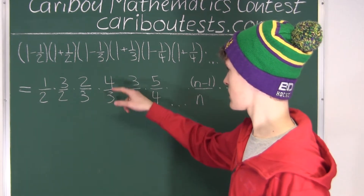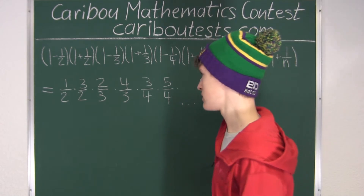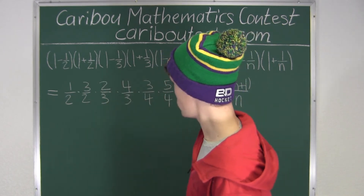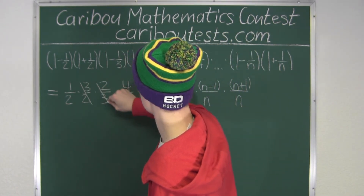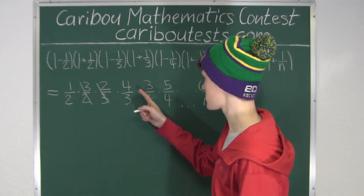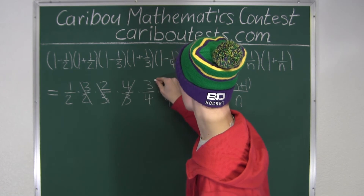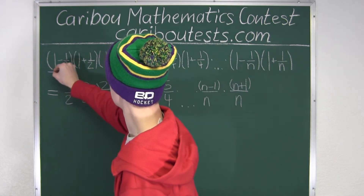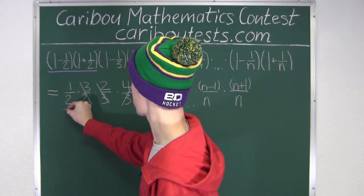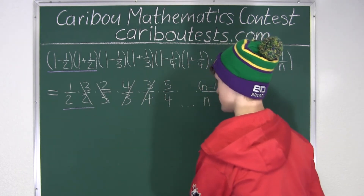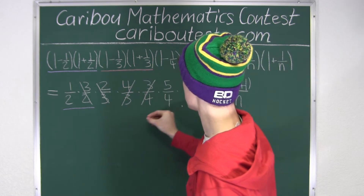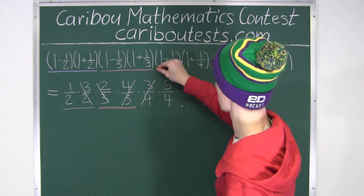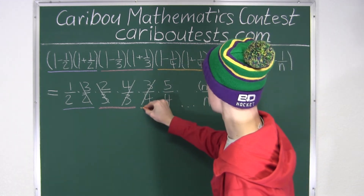Now let's see if we can cancel out any factors. Here we can see 3 over 2 times 2 over 3 — the denominators and numerators cancel out. And here we can also see 4 over 3 times 3 over 4 also cancel out. So the first factorization simplified, the second factorization and its simplified form, and the third factorization and its simplified form all show this cancellation.